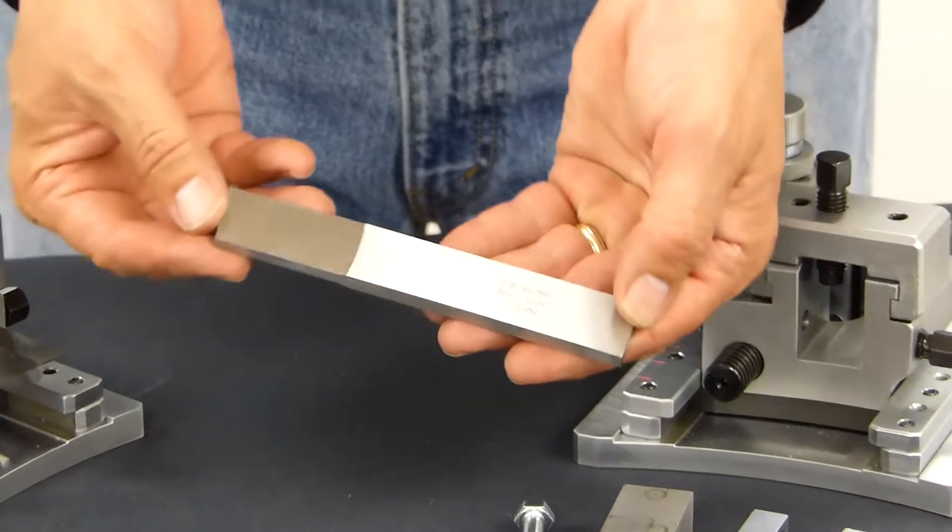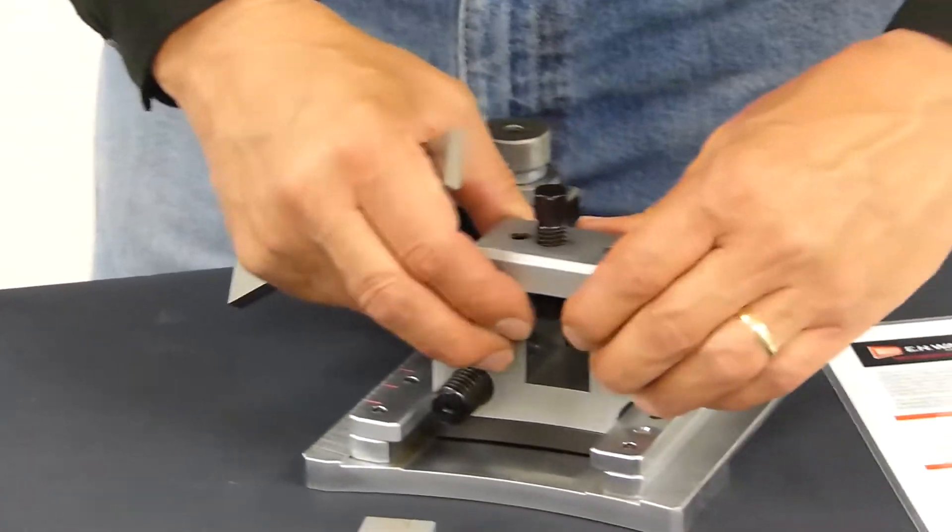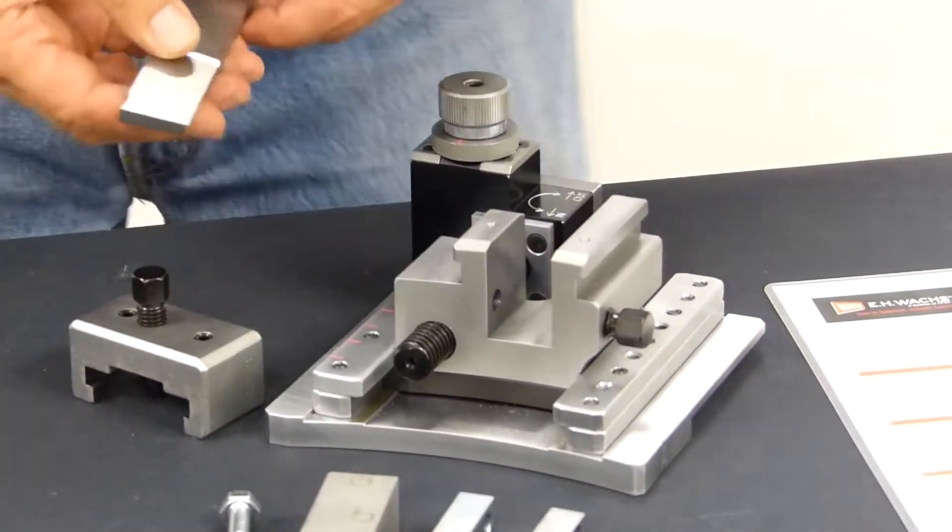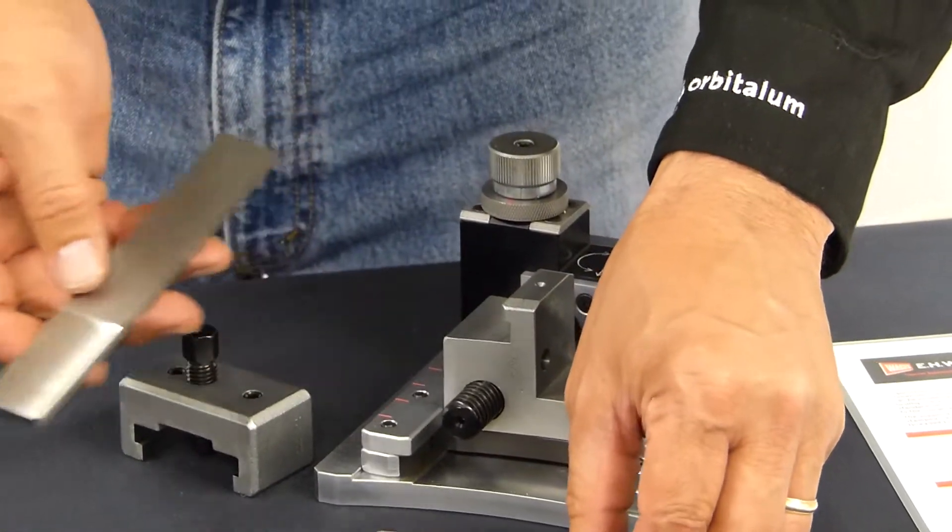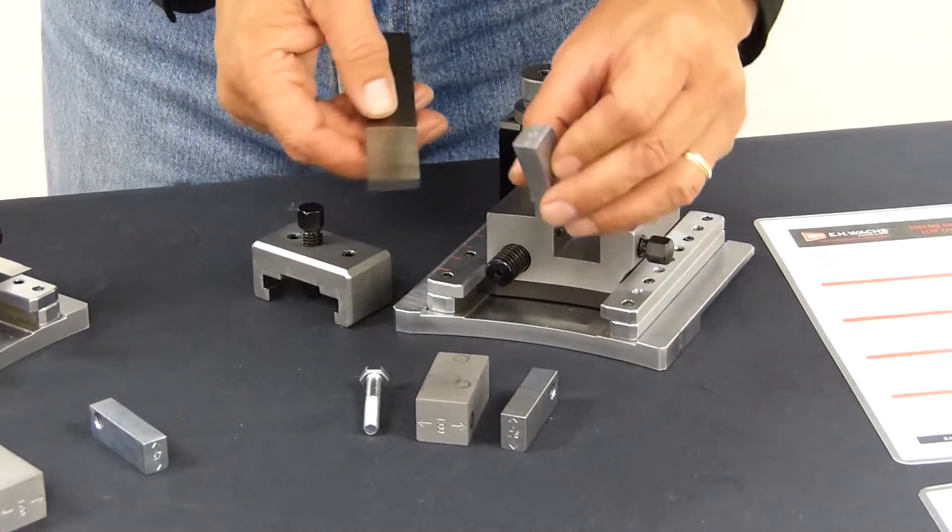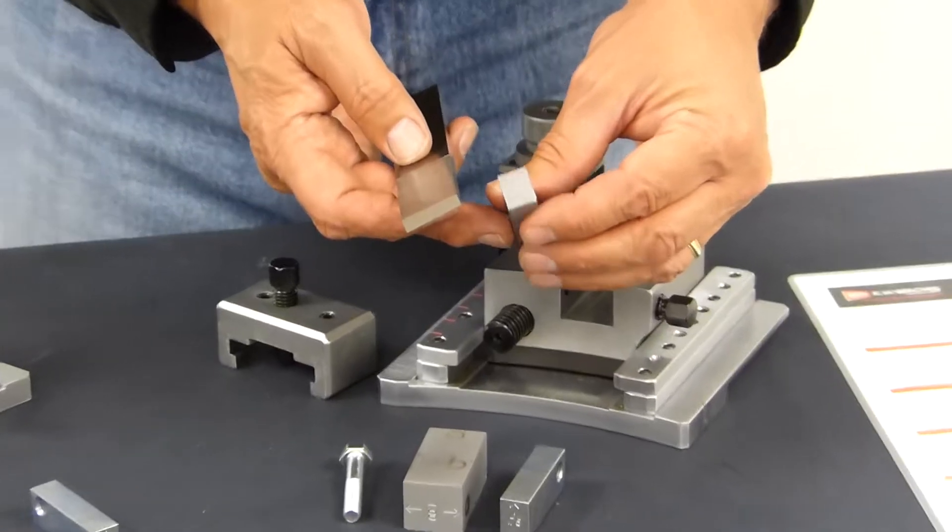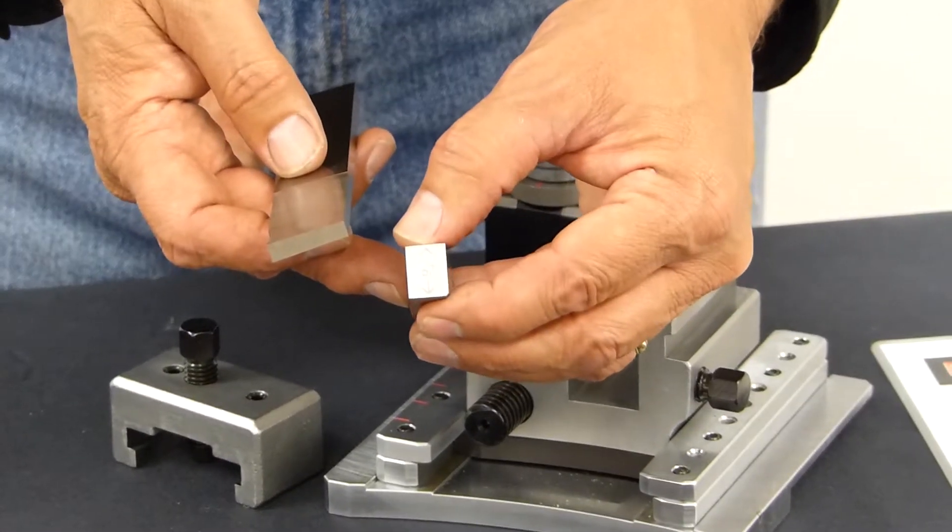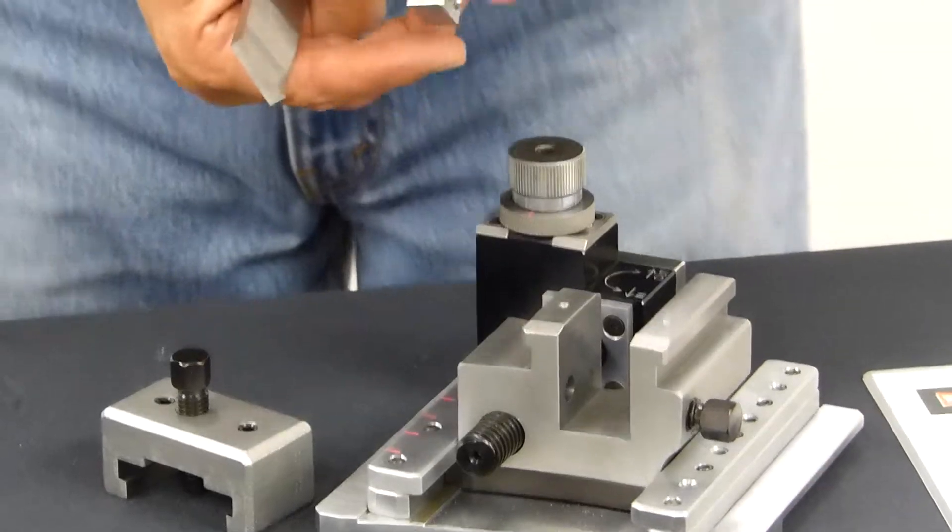Now we're going to place the parting blade in the second slide. We'll remove the cover. Now, since our tooling is three quarters high, we'll want to use a spacer that's slightly shorter. So the 670 spacer gets put into the slide.